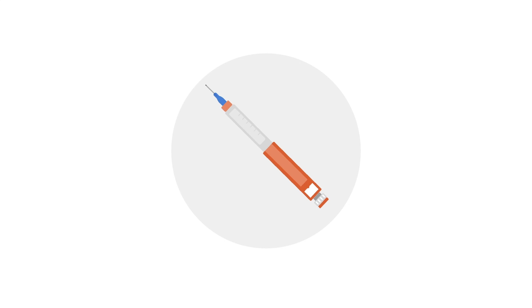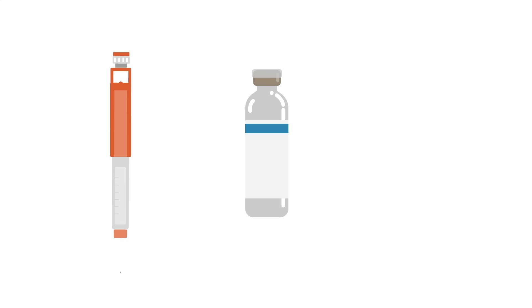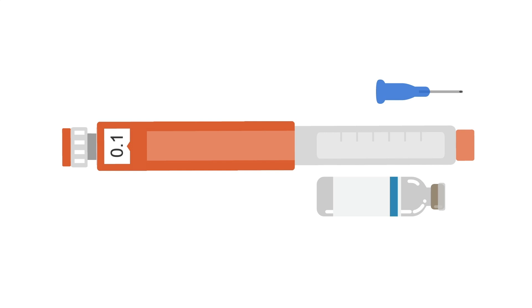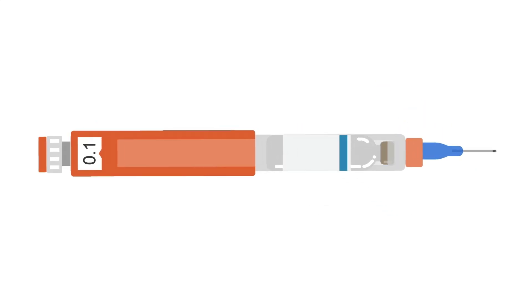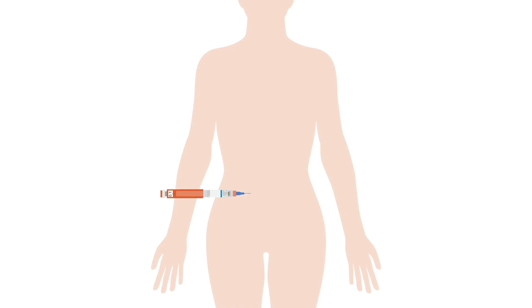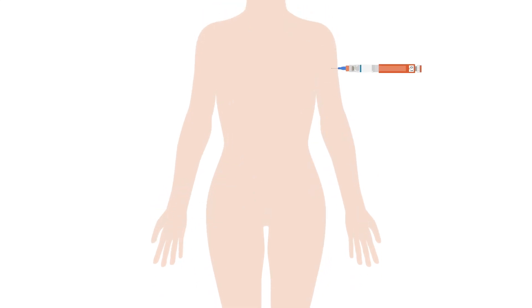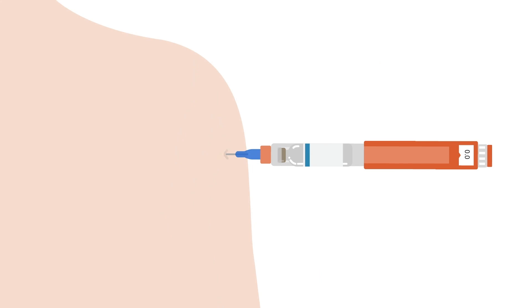For intermittent apomorphine injection, you'll need the pen, medication, and needles. The medication vial is a multi-use vial, but once it's open, it should be used within 48 hours. Before giving an injection, you'll insert the medication vial into the pen and attach the needle. The dose is then adjusted on the pen. The needle is placed into the skin of the abdomen, outer thigh, or arm. Pushing the button on the pen injects the medication.